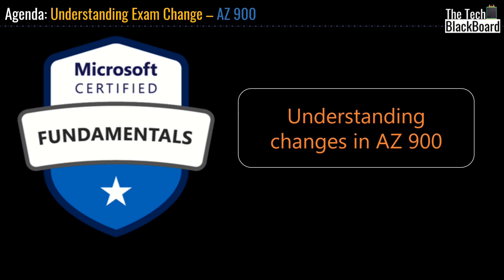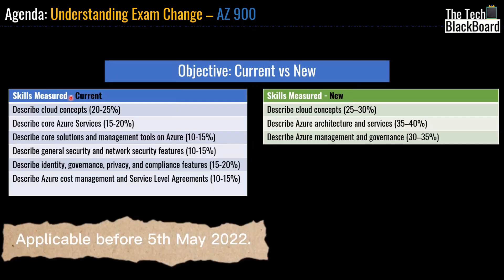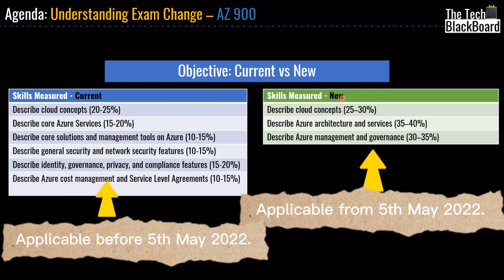I will also show you where you can find the official Microsoft document having details on all these changes. Now on your screen you can see the skill measures which are currently applicable until 5th of May, and on the right hand side you can see the skill measures which will be applicable on and post 5th of May 2022.